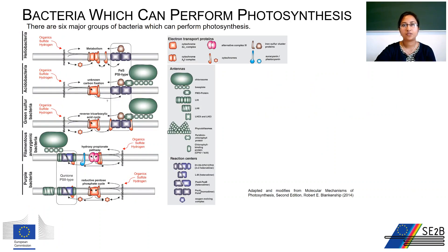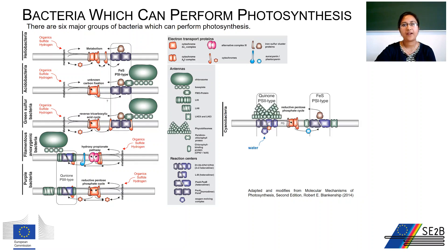There are six main groups of bacteria which can perform photosynthesis. Among them, five are anoxygenic — they do not produce oxygen as a by-product. Those are heliobacteria, acidobacteria, green sulfur bacteria, purple bacteria, and filamentous anoxygenic phototrophs. Cyanobacteria is the single group which can perform oxygenic photosynthesis. This diagram represents the differences in photosynthetic machinery and electron transport systems across these six groups.